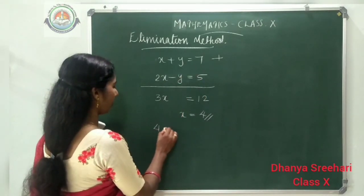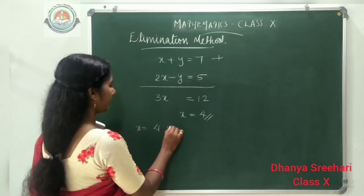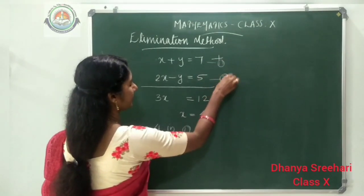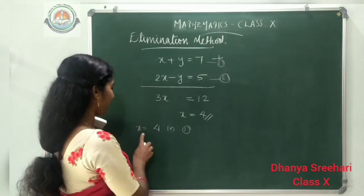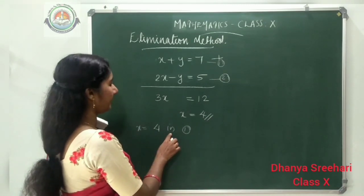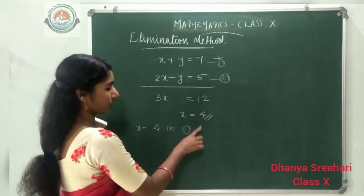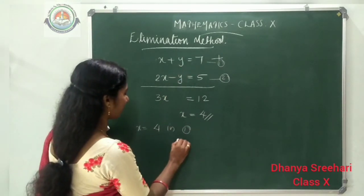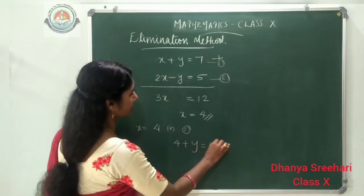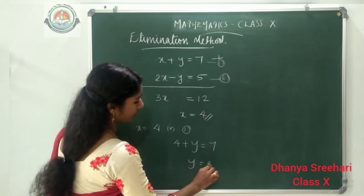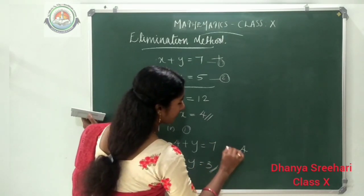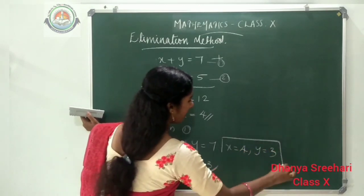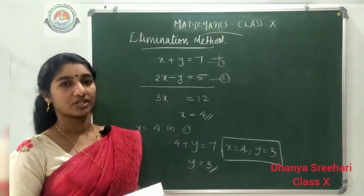We substitute x equals 4 into equation number 1: x plus y equals 7. Substituting x equal to 4 gives 4 plus y equals 7, so y equals 3. We got the solutions: x equals 4 and y equals 3 are the solutions of this pair of equations.